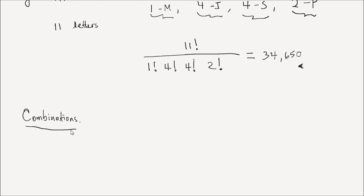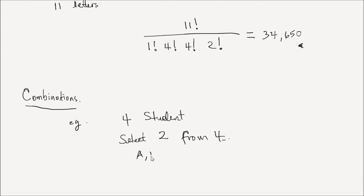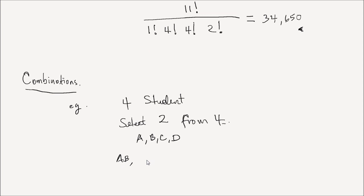I'm going to use a simple example to illustrate what we mean by combinations. Let's say we have four students and we would like to select two of them to attend a conference. Let's say we have person A, person B, person C, and person D. I could select A and B, A and C, A and D, B and C, C and D, and B and D. So there are six possible ways of selecting two students from four students.